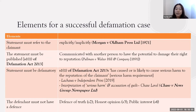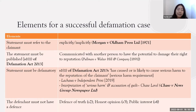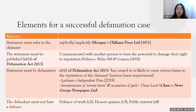The court will attach an accusation of guilt when interpreting serious harm. These are known as Chase levels, named after the case of Chase and News Group Newspaper Limited. If the court decides it is Chase level one, a reader interpreting the statement can see the claimant as guilty of the act. Chase level two means a reader can interpret the claimant as under reasonable grounds to suspect. Chase level three means there are grounds to investigate whether the claimant has committed the act. The different Chase level will affect the defendant's ability to use certain defenses.